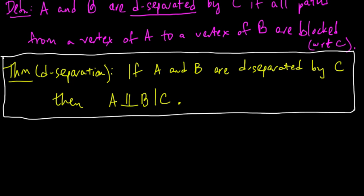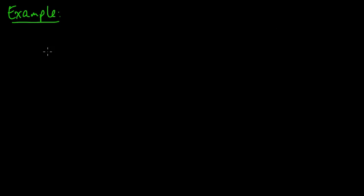We just stated the d-separation theorem for conditional independence in directed graphical models. In this video, let's take a look at an example — actually, a few examples. Let's write down a little graph and we'll see what we can determine using the d-separation theorem. I picked a graph that would be nice for this.